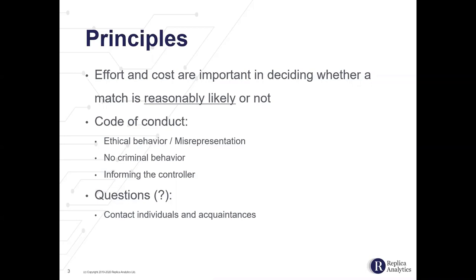The third key requirement is to inform the data controller if a motivated intruder test was performed without their knowledge — similar to responsible disclosure for security bugs, where you give the vendor time to fix the problem before publicizing it. Informing the data controller should happen before publishing a paper or telling the media, giving them an opportunity to limit privacy risks to data subjects. A question that arises: should the analyst contact suspected match individuals to verify, or contact their acquaintances or employers as part of the attack?